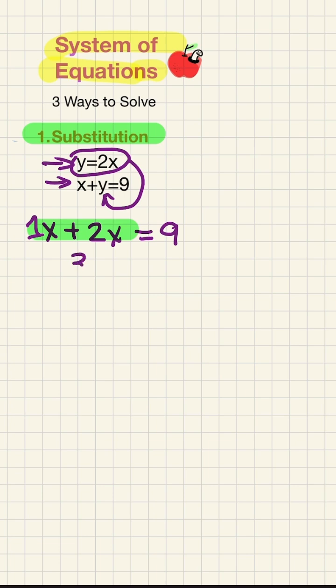Now we have 3x equals 9. We'll divide both sides by 3 to see what x equals. 9 divided by 3 is 3. So x equals 3.